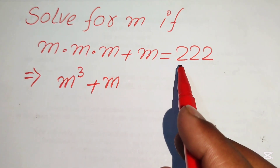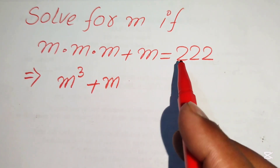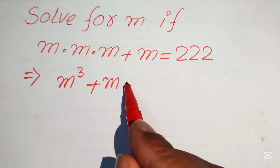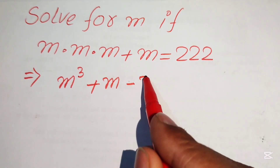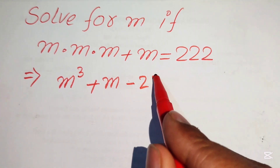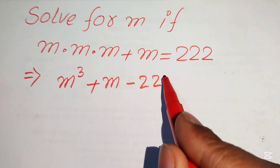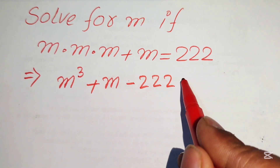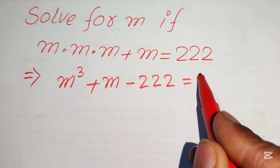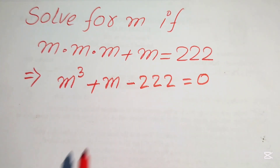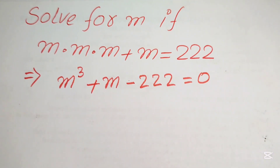Now we move 222 to the left-hand side, so it becomes minus 222, giving us m³ + m − 222 = 0.